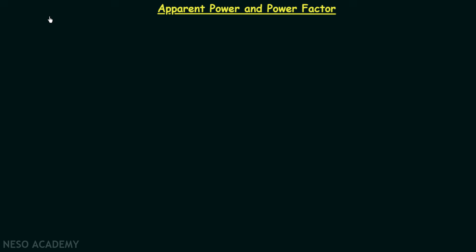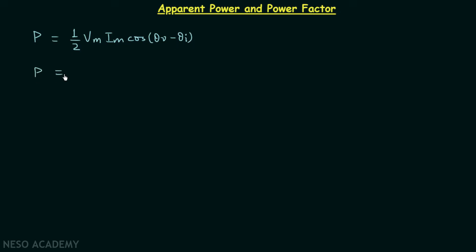In this presentation we are going to have a discussion on apparent power and power factor. We have already obtained the formula of average power. We know average power is equal to half Vm Im cos(θv − θi), and we can write the average power equal to Vrms Irms cos(θv − θi).